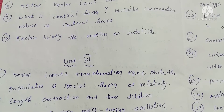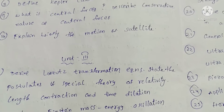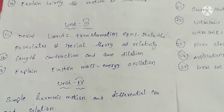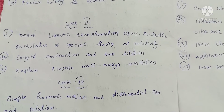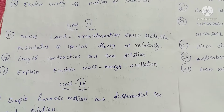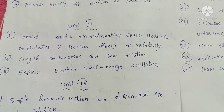Tenth question: Explain briefly the motion of a satellite. Unit three questions: Derive the Lorentz transformation equations and state the postulates of the special theory of relativity.